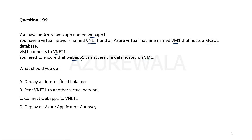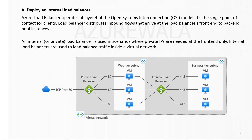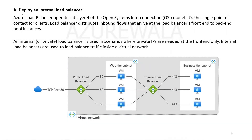What should you do? Option A: Deploy an internal load balancer. Option B: Peer VNet1 to another virtual network. Option C: Connect Web1 to VNet1. Option D: Deploy an Azure Application Gateway. Let's understand these options in detail.